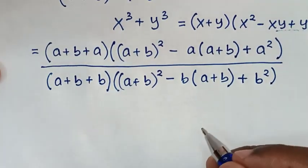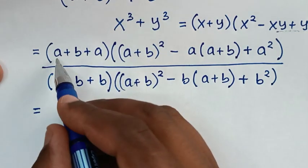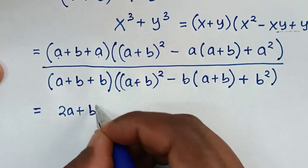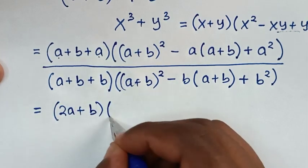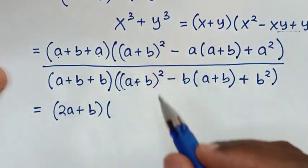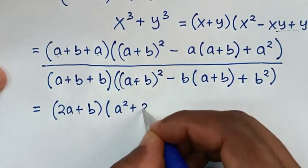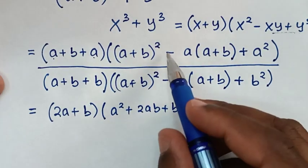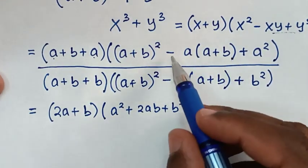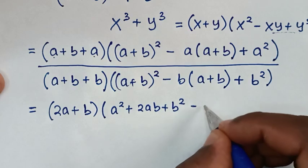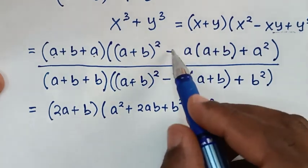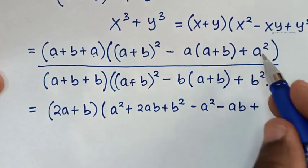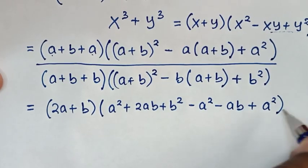Then, in the next step, it will be equal to this, which is 2A plus B bracket bracket. Then, the square of A plus B is A square plus 2AB plus B square. Then, we'll take this negative A inside this bracket. So, negative A times A is negative A square. Negative A times B is negative AB. Then, plus this A square bracket.